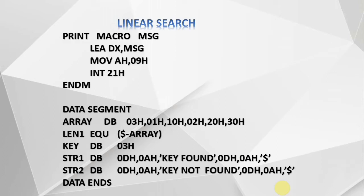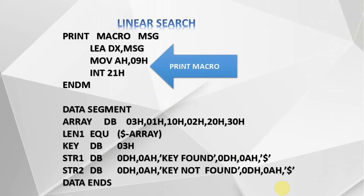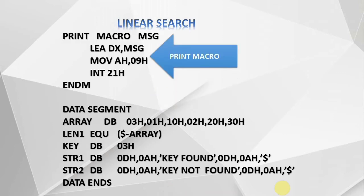This program for linear search uses a macro. The name of the macro is 'print', and it is used to print a string on the screen — whether the key is found or not found. This print macro takes the address of your message into DX, moves 9 into AH, then calls interrupt 21H, which prints the string on the screen.